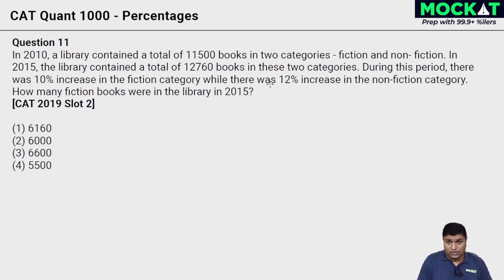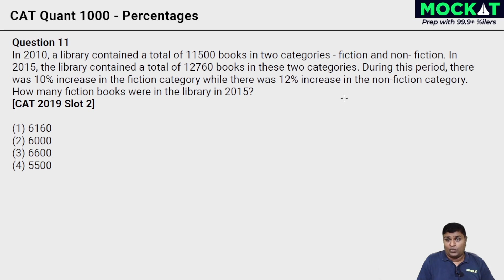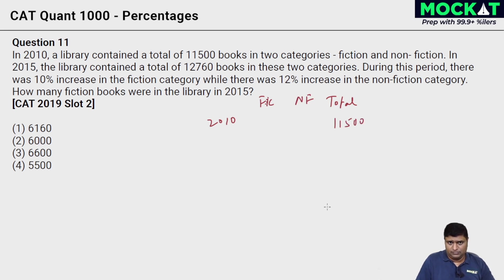In 2010, a library contained a total of 11,500 books in two categories: fiction and non-fiction. In 2015, the library contained a total of 12,760 books. During this period there was a 10% increase in fiction and a 12% increase in non-fiction. We have the 2010 total of 11,500, and fiction and non-fiction columns. Both categories grew — fiction by 10% and non-fiction by 12% — and we are given the actual 2015 total of 12,760.